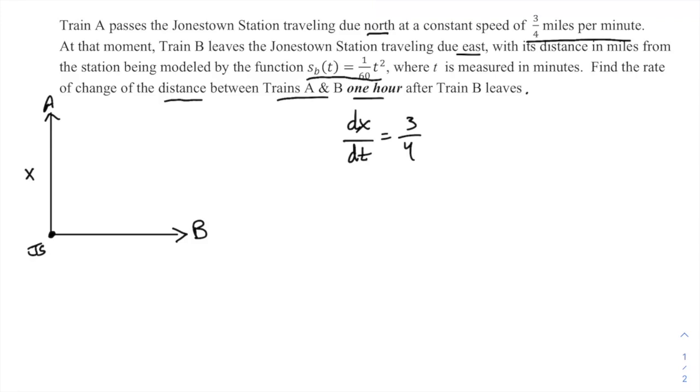Certainly this is not trying to draw this to scale or anything, just a little representation. Train B—this distance, I'm calling that x, maybe you want to call this y. Now this distance y is actually given to you by this function s(t). So if I want the distance at any given time, I need to plug that time in to get this distance. This is kind of an interesting problem how they've mixed and chosen to describe these two different dimensions. And we are trying to find the rate of change of the distance between them one hour after Train B leaves.